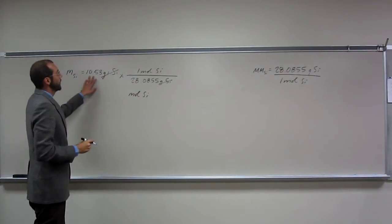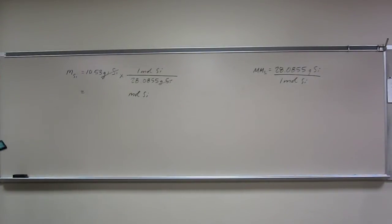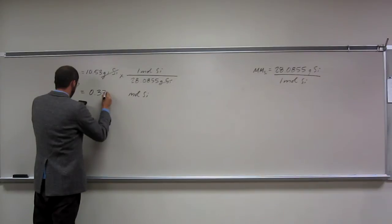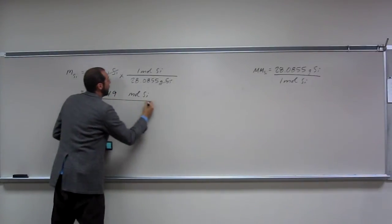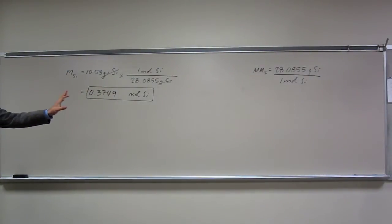And of course, four sig figs is going to be what our answer is to. So 10.53 divided by 28.0855. Zero, one, three, seven, four, five. Okay? Everybody can do that part, right?